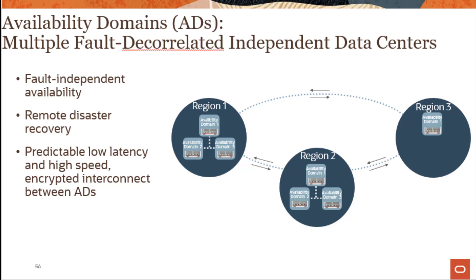power generation, cooling, and network connectivity. The ADs or availability domains are physically separated from each other, which by default provides protection against any kind of natural or other disasters. As you can see from the region 1, region 2, and region 3 diagram, some regions have multiple ADs and some new regions are coming online